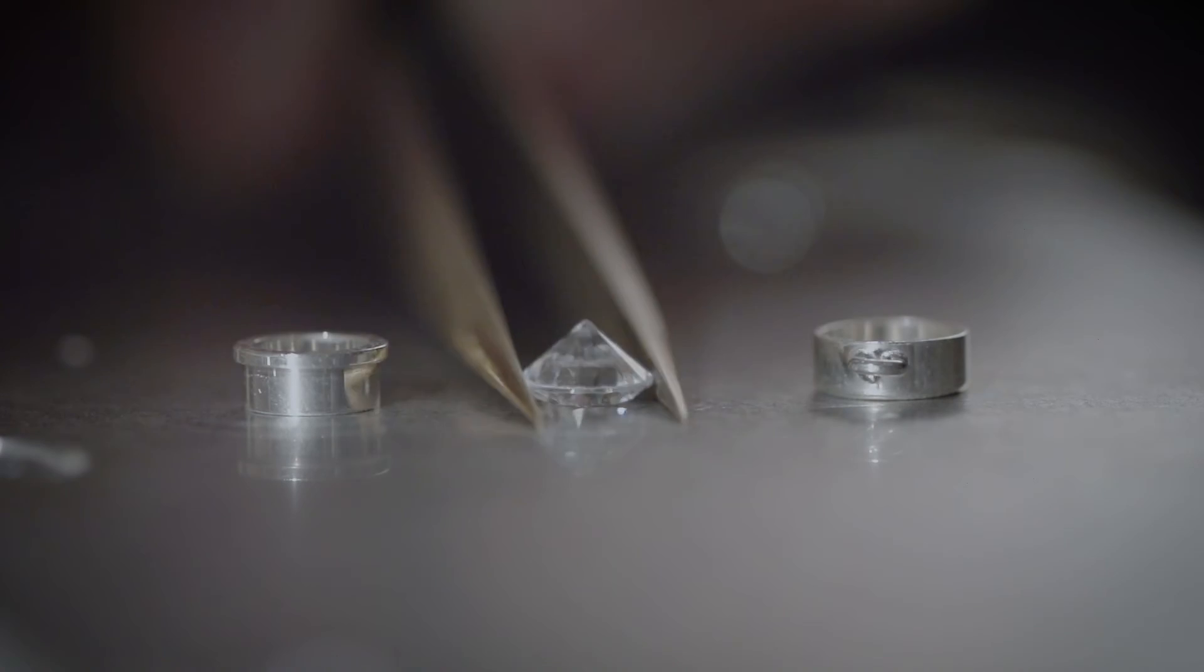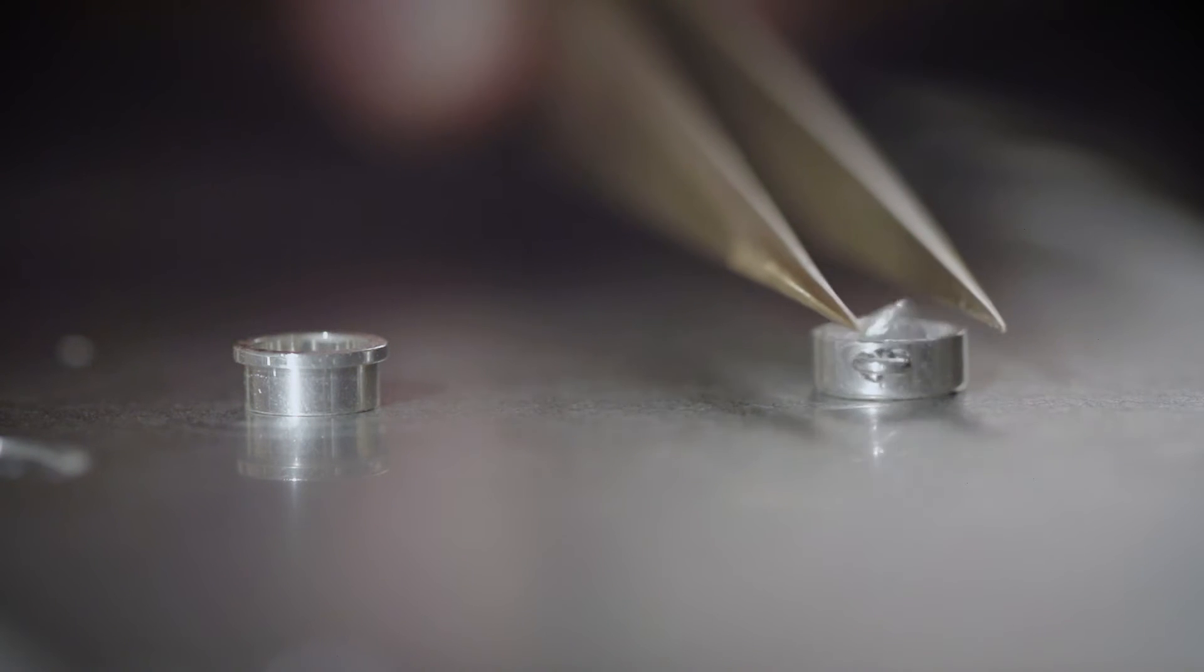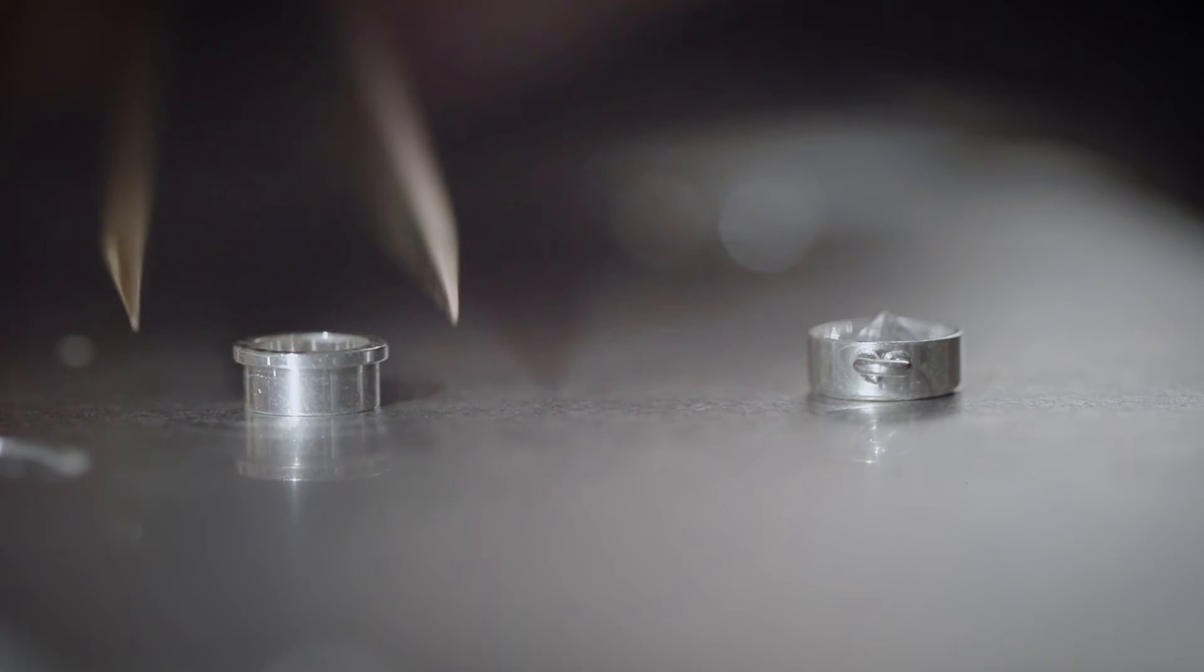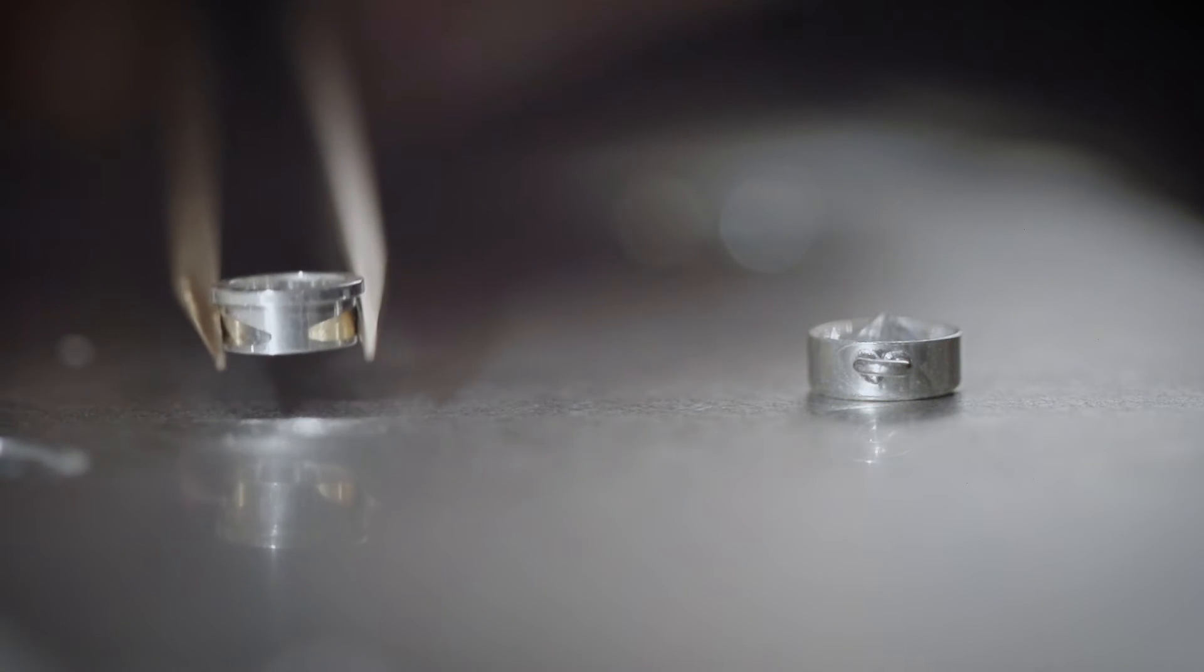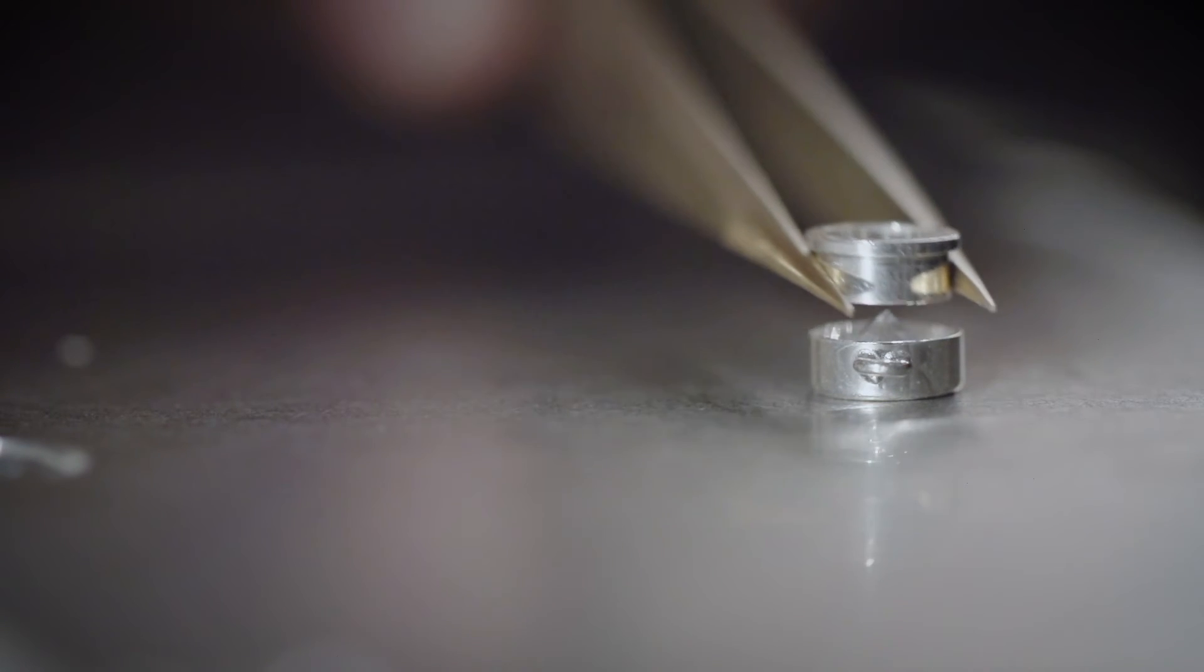The process is simple. With the bezel upside down, place the stone table down in the bezel. Then, place the back set component down over the pavilion of the stone.